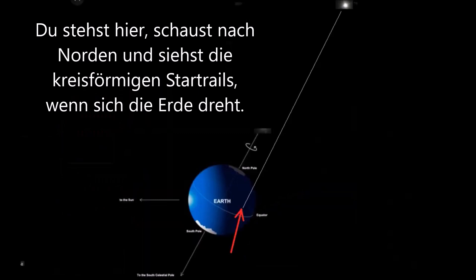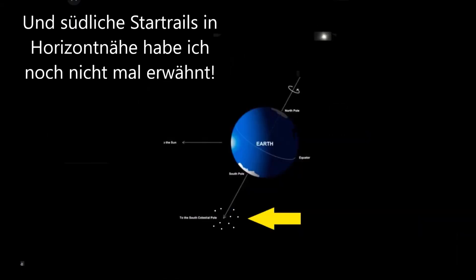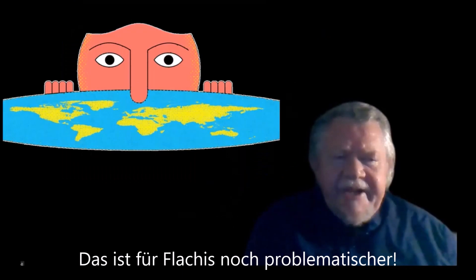Stand here, and you are looking north, and you see the star trails around Polaris as Earth spins. Stand in a different location looking towards the north, and you will still see circular star trails around Polaris as Earth spins. I have deliberately not mentioned the southern star trails at the horizon — that presents even greater problems for flat Earth.